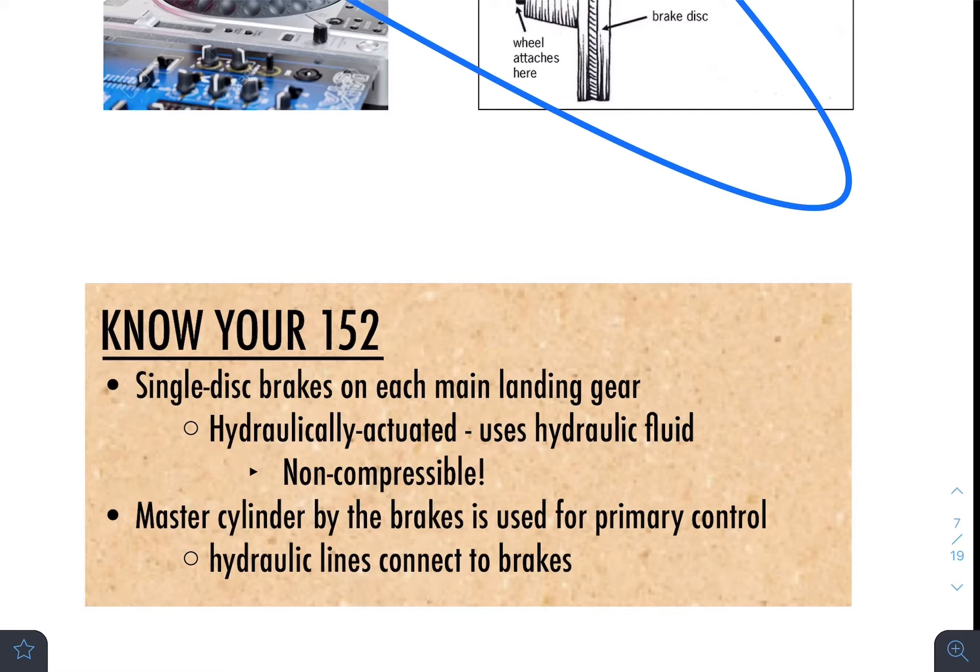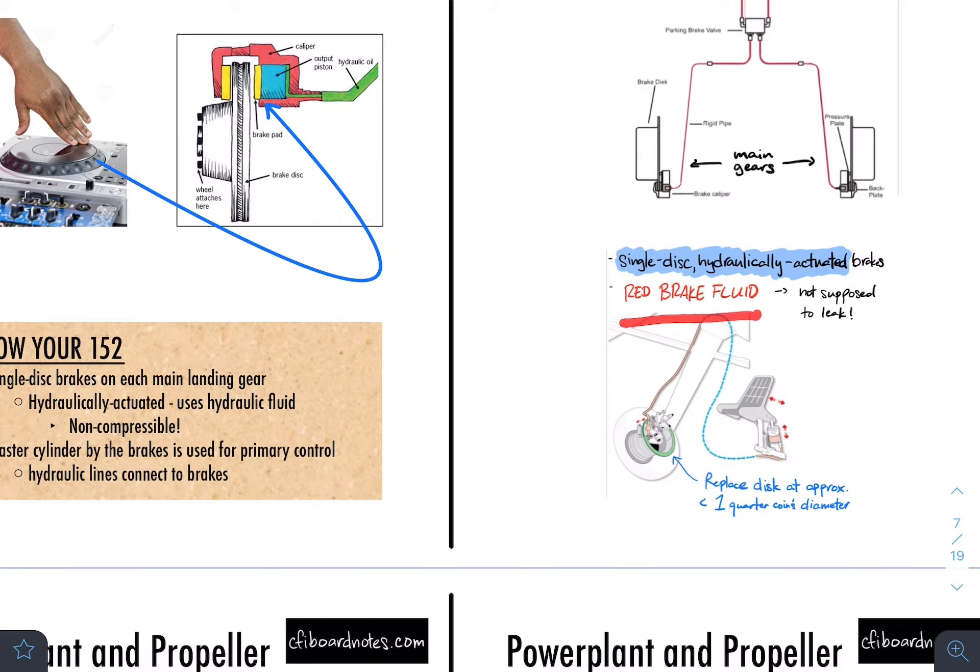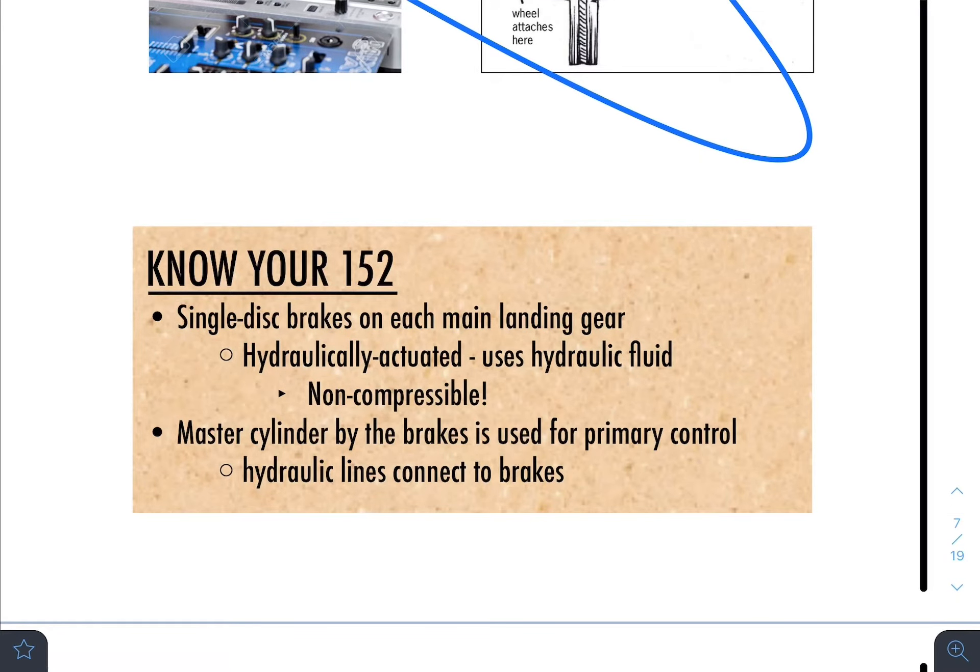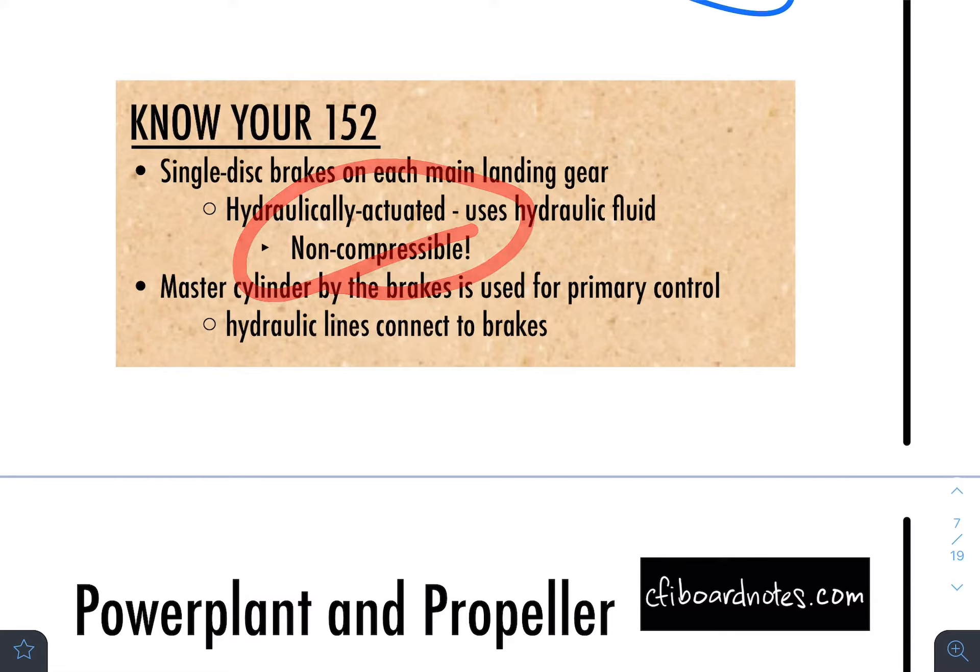Hydraulically actuated, meaning it uses hydraulic fluid. Hydraulic fluid is going to be the red brake fluid that we have, and it's all based on the concept of it being non-compressible. Meaning, if you put a specific amount of pressure, like one psi here, you're going to get one psi of pressure over here. It doesn't compress. Whatever amount of pressure is the same pressure that is going to be enacted upon the brake pad. This is why we use hydraulic fluid. And there would be a master cylinder by the brakes used for primary control. Hydraulic lines connected to brakes as well.